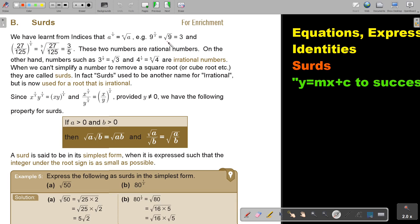If it's 9 to a half, then it's the square root and that's 3. And if it's this, then it's the cube root and that's 3 over 5. These two numbers are rational numbers. That means they end. You can write them as a vulgar fraction.